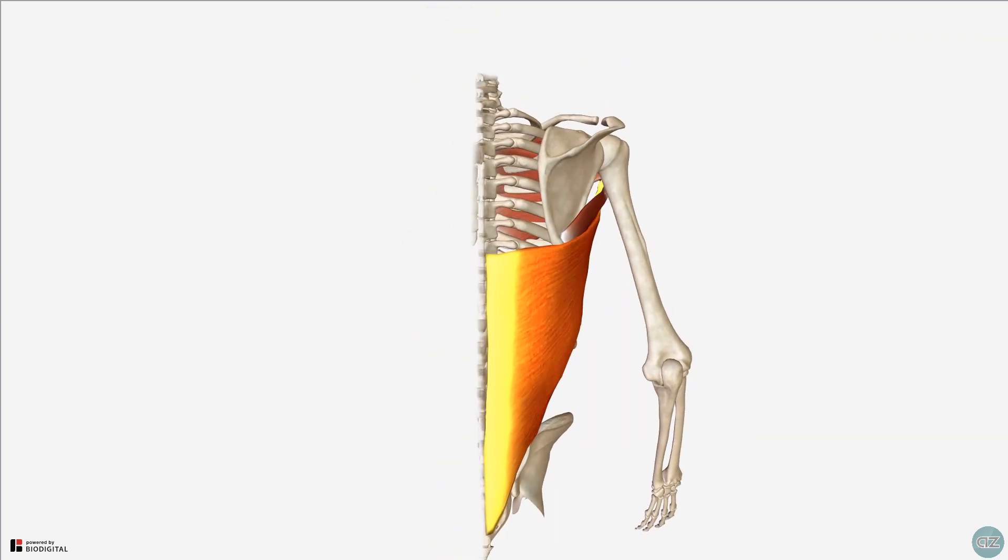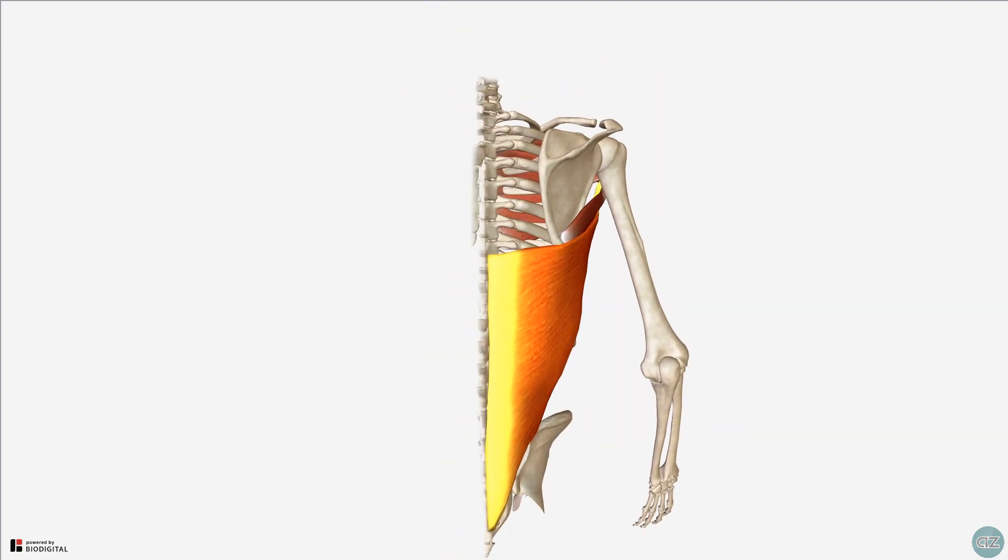An important functional movement is to bring the body towards the arms when the upper extremities are fixed overhead, such as in climbing, or in exercise, it's important for movements like chin-ups. In addition, the latissimus dorsi can serve as an accessory muscle of respiration and has been found to be active during deep inspiration and also with forceful exhalation, such as when sneezing or coughing.